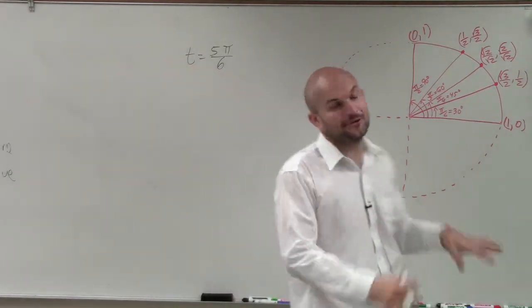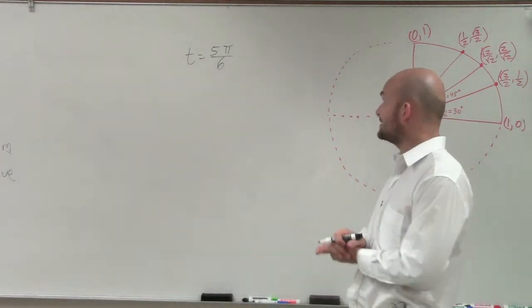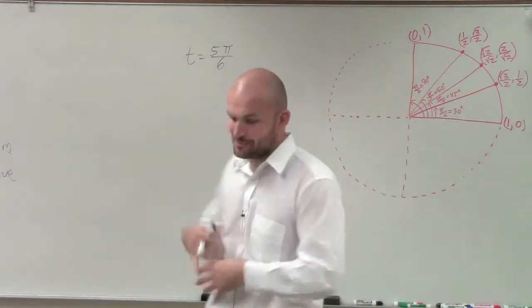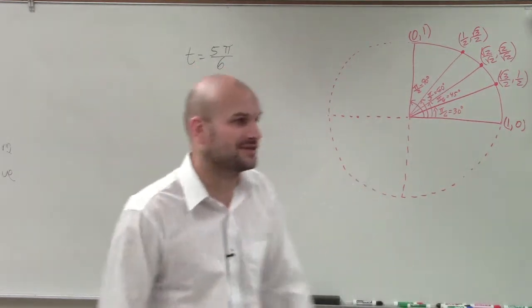Welcome. So later in general, I have t equals 5 pi over 6. And what I'm going to do for this is I'm going to sketch the angle and then find the point on the unit circle.